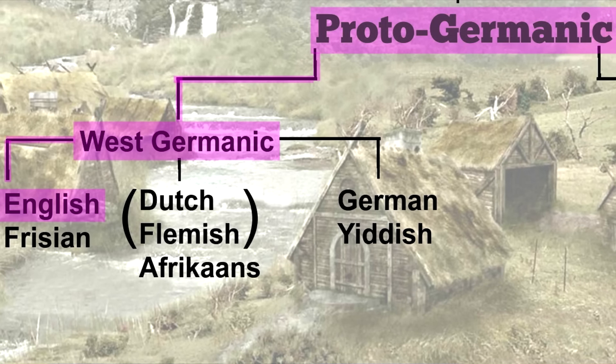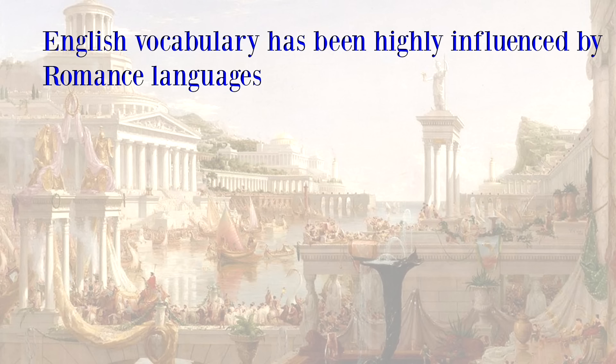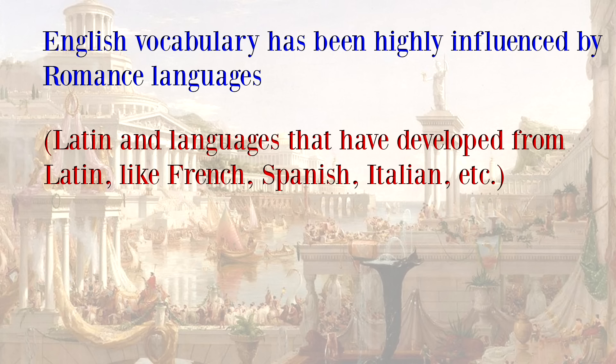So because English developed from Proto-Germanic, it is a Germanic language, despite massive changes that have taken place in its vocabulary. The vocabulary of English has been highly influenced by Romance languages, Romance meaning Latin and any language that has developed from Latin, like French, Spanish, Italian, etc. So, how much has it been influenced?